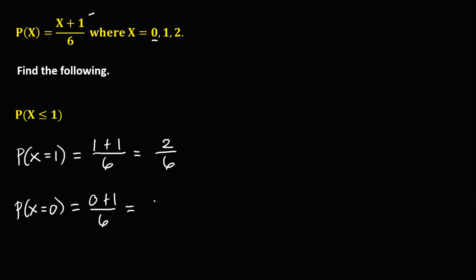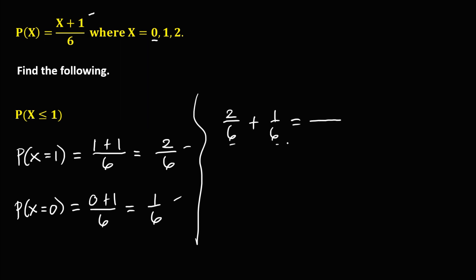Then we add the fractions: 2 over 6 plus 1 over 6. The denominators are the same, so just copy the denominator and add the numerators: 2 plus 1 is 3, giving us 3 over 6. For the final answer we need to reduce: 3 over 6 is divisible by 3, so that's 1 over 2. Therefore, the probability for x less than or equal to 1 is 1 over 2.